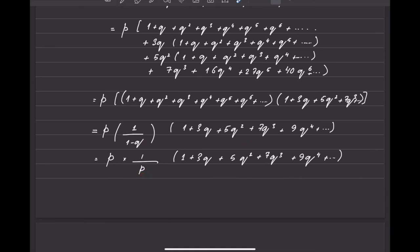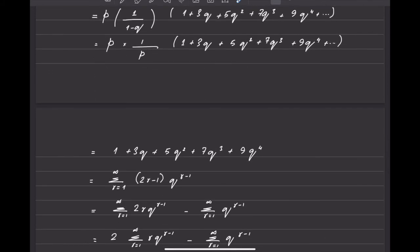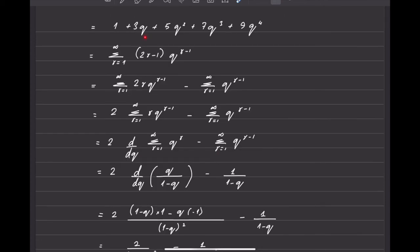Applying the geometric series formula — 1/(1 minus q) — and since 1 minus q equals p, the p values cancel, leaving only the series 1 plus 3q plus 5q² plus 7q³ plus 9q⁴, which can be written generally as the summation from r equals 1 to infinity of (2r minus 1) times q to the power r minus 1. I can break this into a difference of two series.